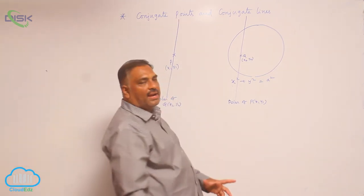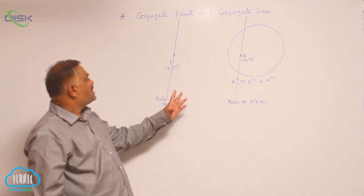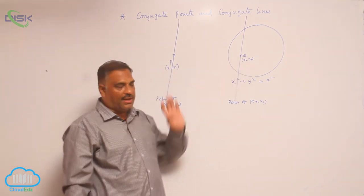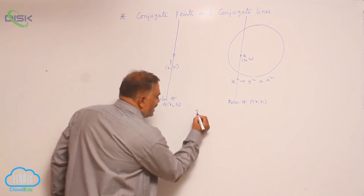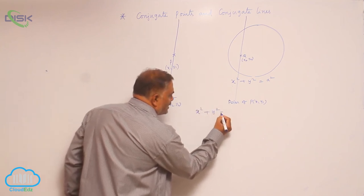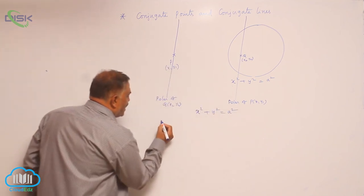Now, we will derive a condition. What is the condition that the two points are conjugate? Now, circle equation is x square plus y square equal to a square.